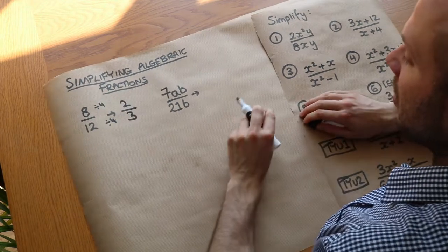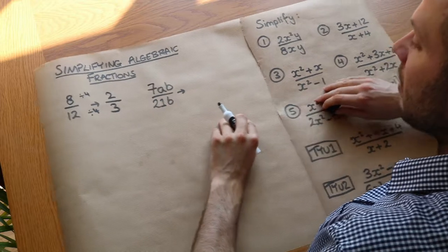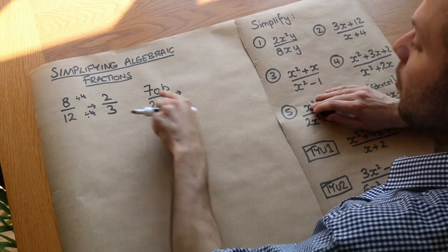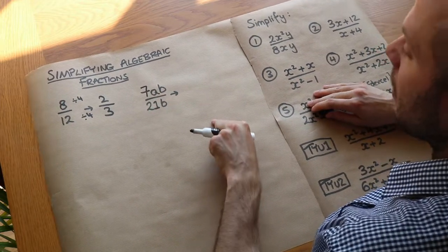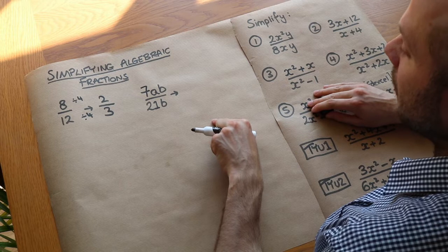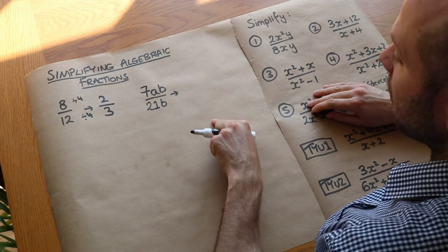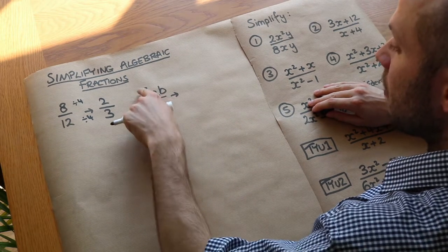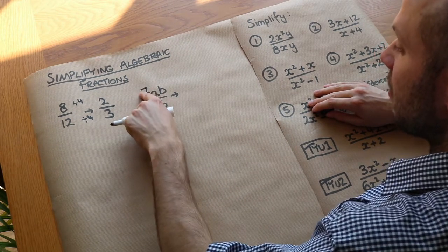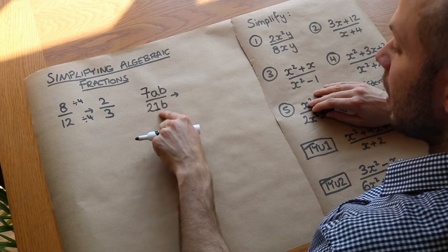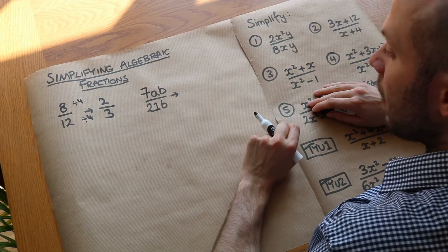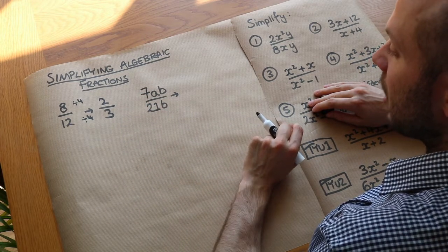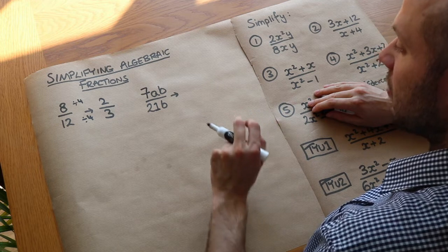Now exactly the same principle applies with algebraic fractions. We've got to see what's common to the top and the bottom and we divide the top and bottom appropriately. So what do we have in common? Well in terms of the numbers first, we've got 7 and 21, and they have a common factor of 7, so we could divide top and bottom by 7.